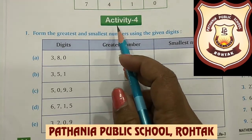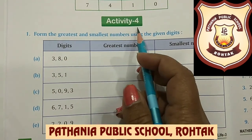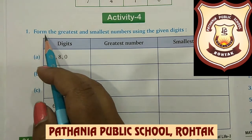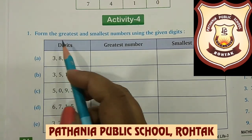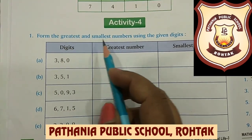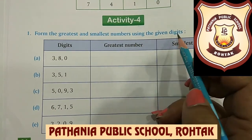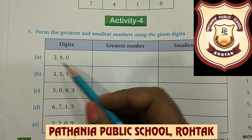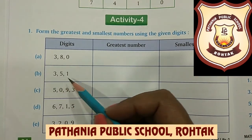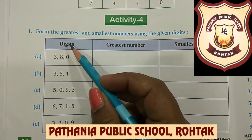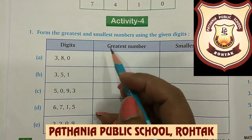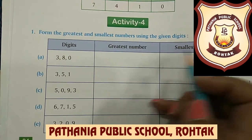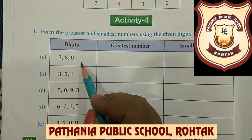This is our Activity 4. First of all, we will read the question: Form the greatest and smallest numbers using the given digits. Some digits are given and we need to form the greatest number and the smallest number with the same digits.